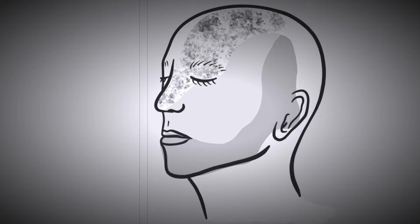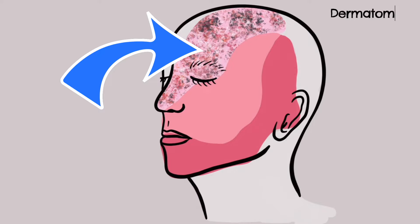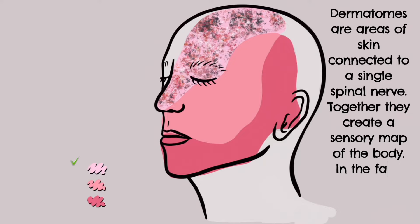Herpes Zoster Ophthalmicus, more commonly known as shingles, is an ocular and periocular disease characterised by a unilateral painful skin rash in one or more dermatome distributions of the trigeminal nerve, predominantly in the ophthalmic or V1 division.